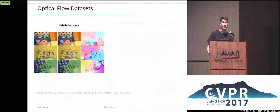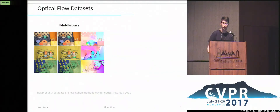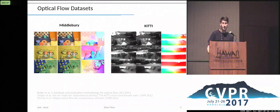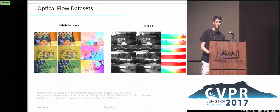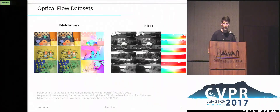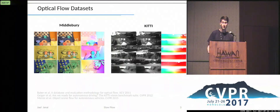The first publicly available dataset, Middlebury, only provides eight examples recorded in a lab setting. While KITTI provides already 400 examples in more complex street scenes, it is still not sufficient to train sophisticated models. Therefore, larger datasets are necessary, but the generation of ground truth data is difficult.